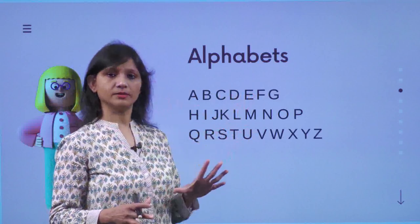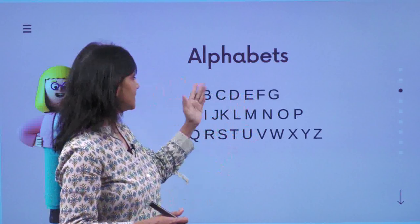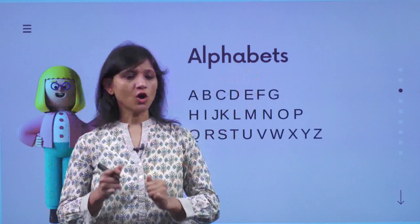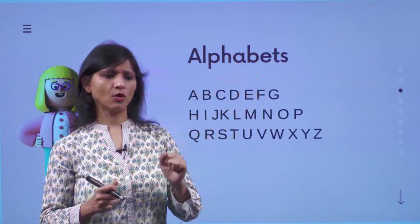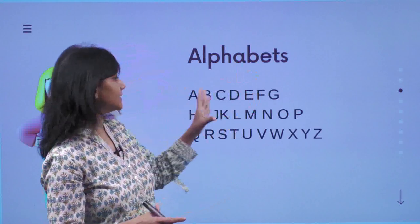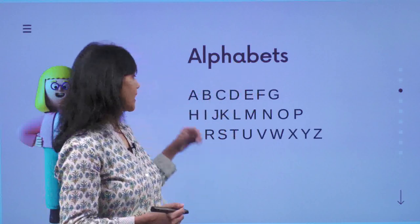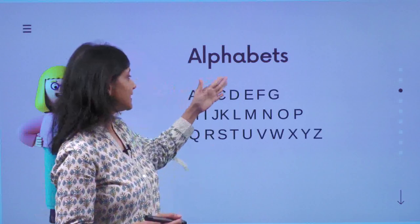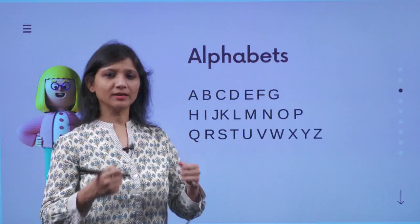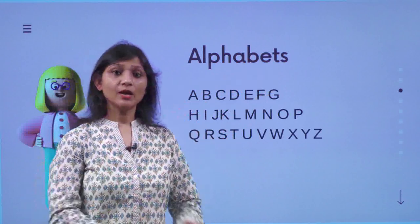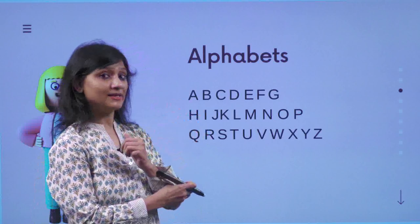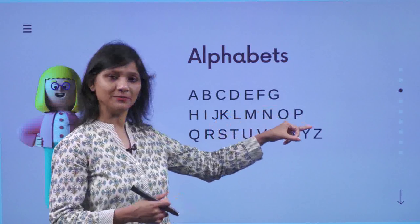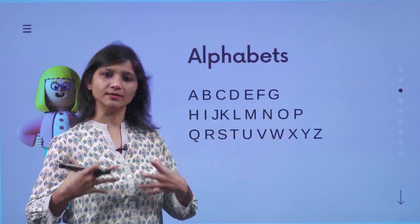Now all of us know these alphabets: A, B, C, D, E, F, G. When your teacher or when you were in nursery, or when your mama wanted to make you memorize these letters, she used to sing the song, right? A, B, C, D, E, F, G — and why do we sing? Because when we sing and read something out, we memorize well. That is how you have actually started learning these alphabets.